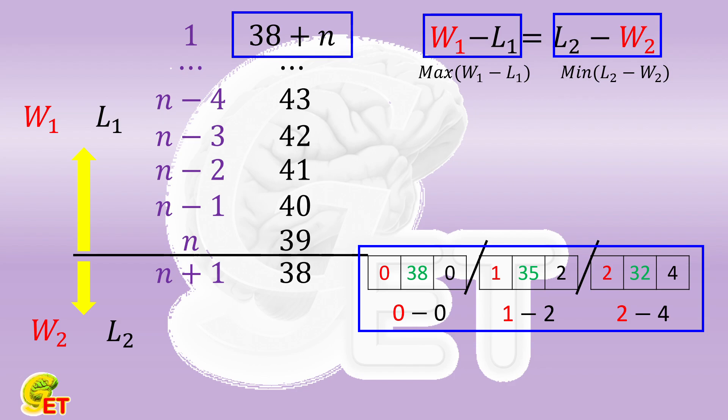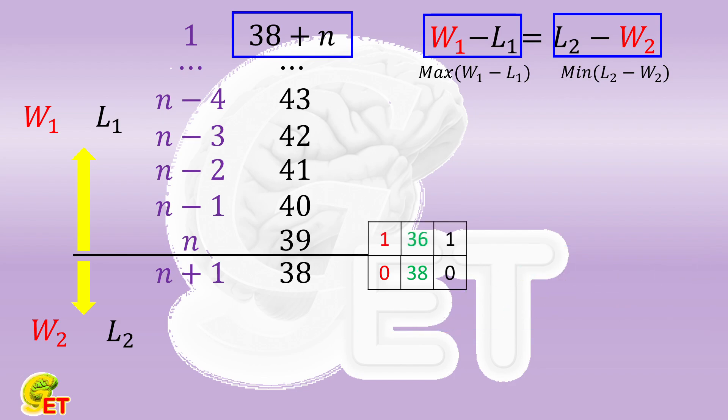Therefore, the team with 39 points has 1 win, 36 draws and 1 loss. The team with 40 points has 1 win and 37 draws. The team with 41 points has 2 wins, 35 draws and 1 loss. The team with 42 points has 2 wins and 36 draws. The team with 43 points has 3 wins, 34 draws and 1 loss, etc.